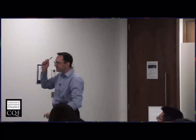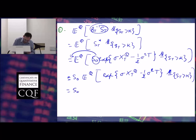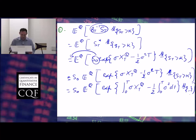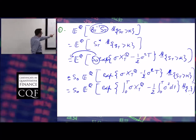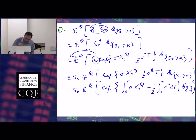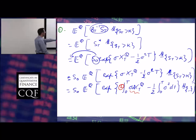So let's rewrite that as S0 times the expected value under Q of exponential of the integral from 0 to T of sigma dX_t^Q minus one-half of the integral from 0 to T of sigma squared dt, times the indicator function of exercise. Now it looks much more like an exponential martingale — except for one detail: here I have a plus for the Brownian motion term, whereas in my definition of exponential martingales I always had a minus.